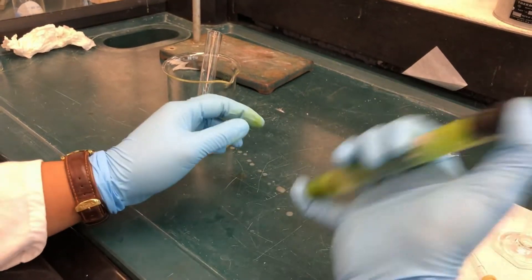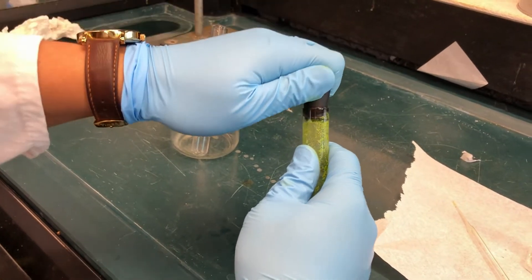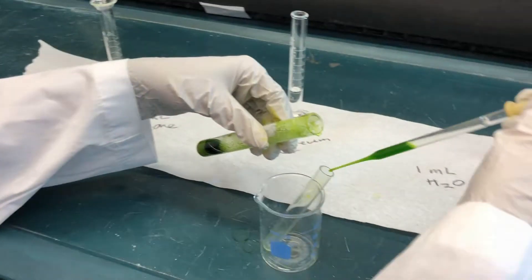Shake for 5 minutes. Be sure to hold your thumb over the stopper so that it can't pop out. Remove the stopper occasionally to remove pressure inside the test tube.